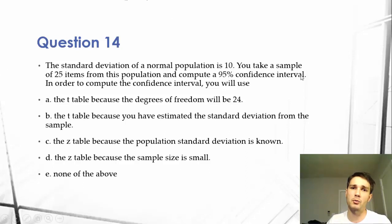The standard deviation of a normal population is 10. You take a sample of 25 items from the population and compute a 95% confidence interval.